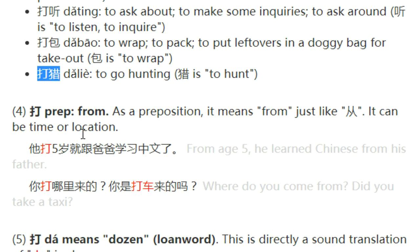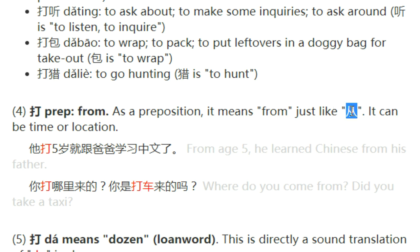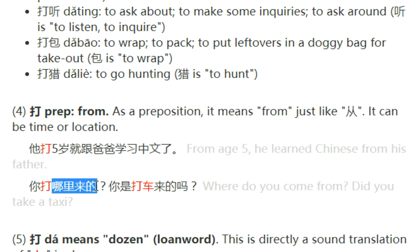The fourth grammar point about 打 is not as a verb but as a preposition meaning 'from,' the same as 从. It can indicate from a time or location. 他打五岁就跟爸爸学习中文了 — He learned Chinese from his father starting at age five. 你打哪里来的? — Where do you come from? Note: 你是打车来的吗? here means 'Did you come by taxi?' where 打车 means to take a taxi.